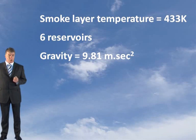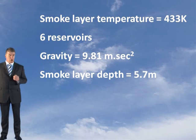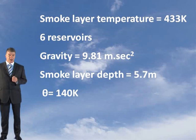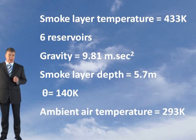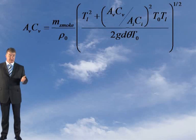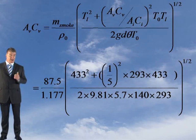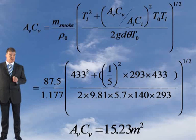Acceleration due to gravity is 9.81 meters per second squared. Your smoke layer depth is 5.7 meters. You've got a theta value of 140 degrees Kelvin. Your ambient air temperature can be taken as 293 degrees. Put them into this formula, as you can see here, and you should get an AVCV factor of approximately 15.23 square meters.